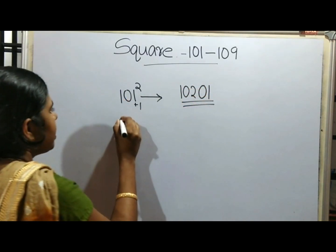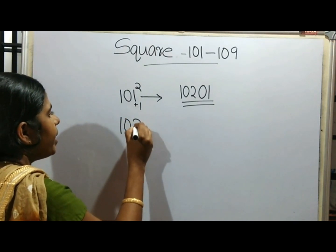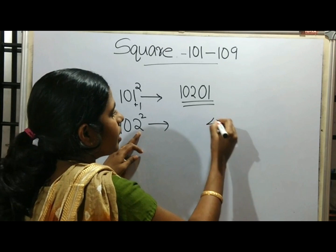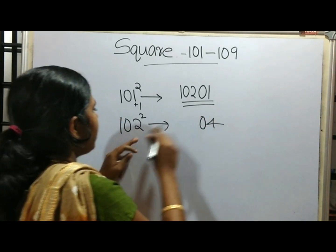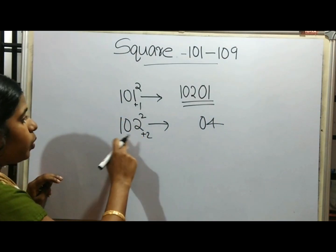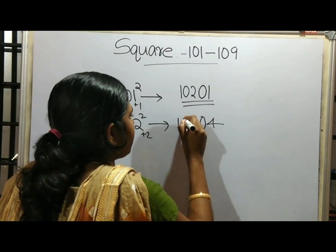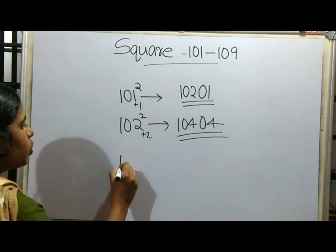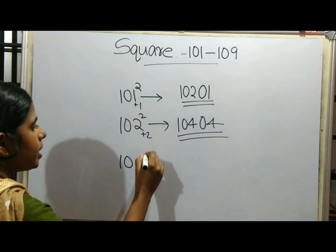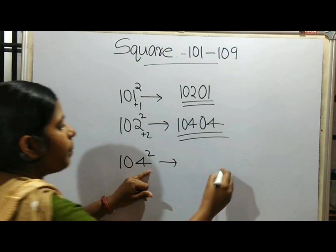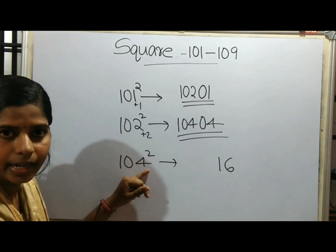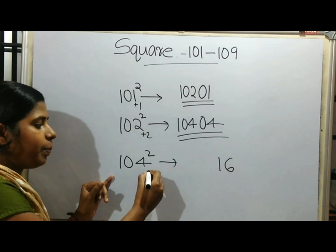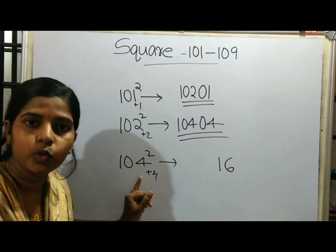This is the answer. 2 squared is 4. There is a 0. The last digit is 2, and 2 squared is 4. So 4 is placed. Two digits become 0. So 101 squared gives us 10201. For 104 squared: 104 plus 4 gives 108.